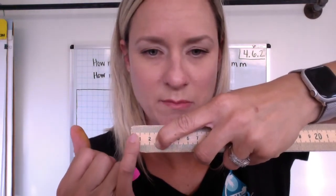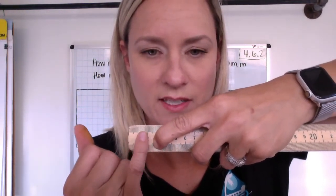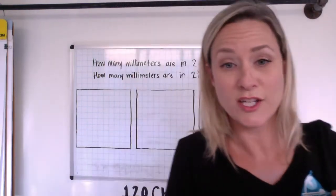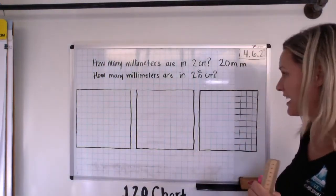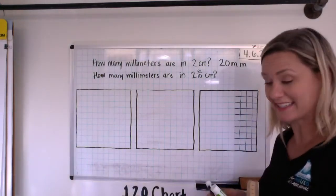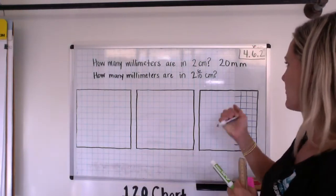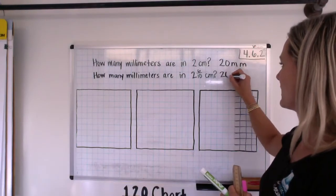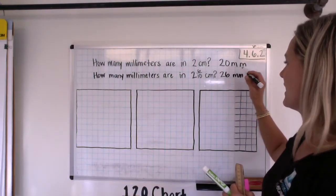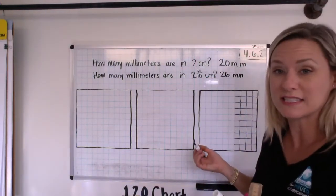There were 10 millimeters there, 20 there, and 6 more. So, you may have realized that it would be 2 and 6 tenths. Otherwise known as 26 millimeters, which is the same as 2 and 6 tenths centimeters.